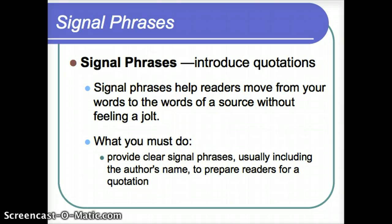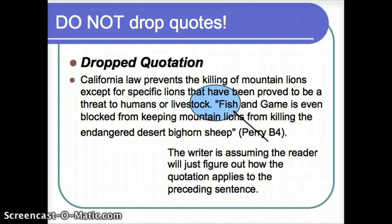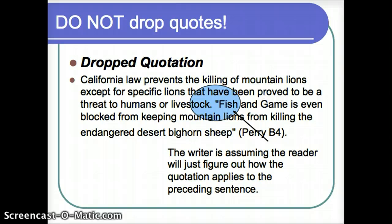A signal phrase is a way to introduce quotations and someone else's ideas while giving proper credit to the author of that idea. You would use these to add fluency or flow in your writing so you don't have a choppy transition into a quotation. You don't want to do dropped quotations — you want to make sure your quotation and the sentence you're writing are properly punctuated and correctly connected. Here's an example of a dropped quotation: 'California law prevents the killing of mountain lions except for specific lions that have been proved to be a threat to human or livestock.' The quotation is then just floating there without any connection to your sentence — that's what we want to fix.